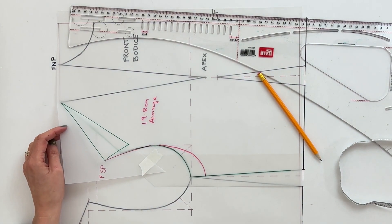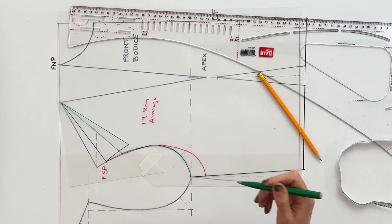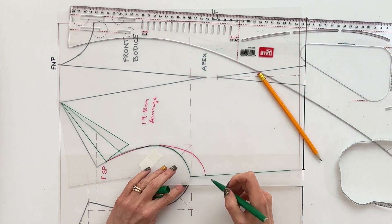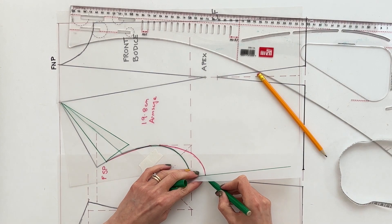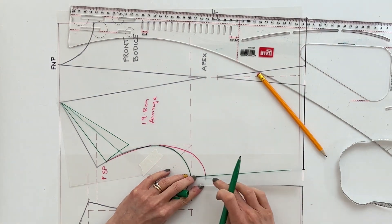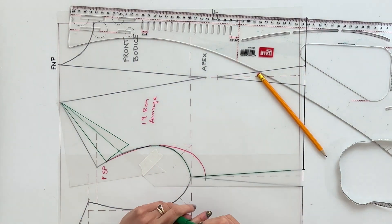While we've got the changes here though I'm just going to make a note of where the armscye needs to sit for our back pattern piece, how much it needs to drop down so the side seams are the same length.